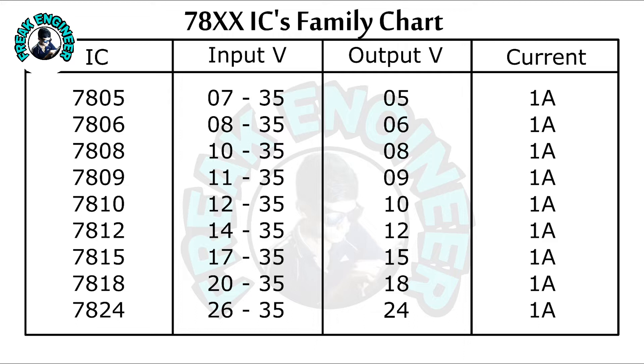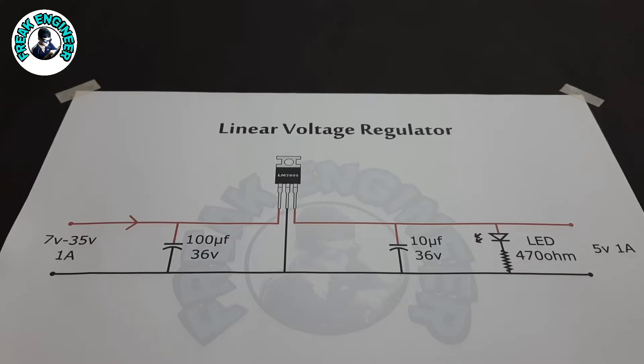The input voltage should be 2 volts higher than the output voltage and the maximum input voltage is limited to 35 volts. Also, the input and output currents are limited to 1 ampere.